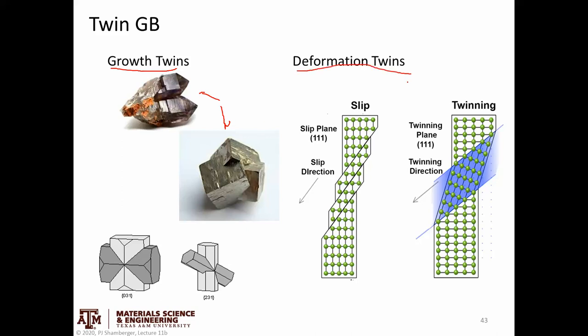Alternatively, we could have a deformation twin. A deformation twin occurs when you are applying some kind of a mechanical load. If we look at this crystal lattice in tension, one of two different things could happen: we could either have slip along some particular lattice planes — that's what's shown to the left — or we could accommodate this tension by formation of a twin. This is another example of a reflection twin, where the top part is the same as the bottom part reflected across the grain boundary.